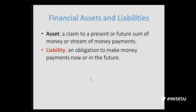Now let's talk about some basic concepts having to do with financial assets and liabilities. An asset is a claim to a present or future sum of money or stream of money payments. A present sum of money is the ownership of the money itself. If you have a present claim to a sum of money I'm holding, that means it's yours — I'm only holding it as a result of a contract. You have not loaned that to me. If you loan it to me for three months or 30 years, that's a credit claim — a claim to a future sum of money.